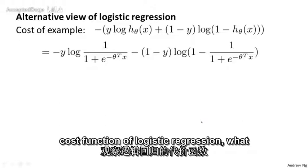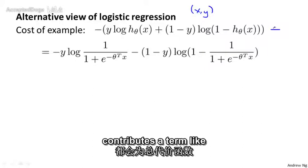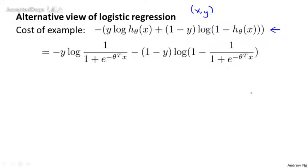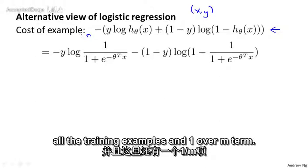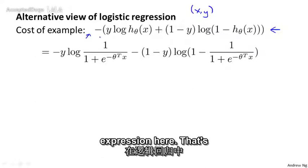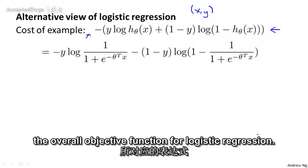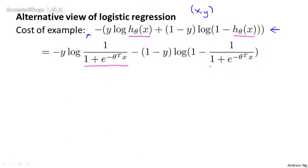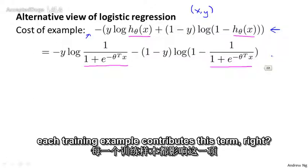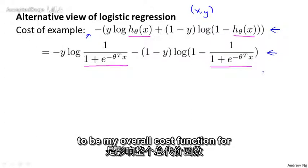If you look at the cost function of logistic regression, each example x, y contributes a term to the overall cost function. For the overall cost function, we also have a sum over all training examples and a 1/m term. This expression is the term that a single training example contributes to the overall objective function for logistic regression. If I take the definition for the form of my hypothesis and plug it in, each training example contributes that term to my overall cost function.